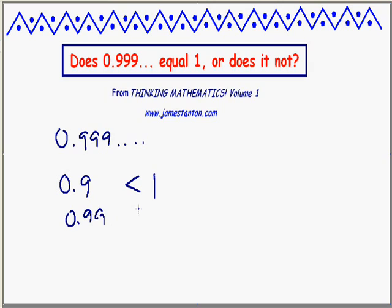What about 0.99? That too is smaller than one. It's a bit closer, but it's smaller. What about three nines? 0.999. I'm afraid that's still less than one.